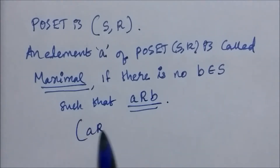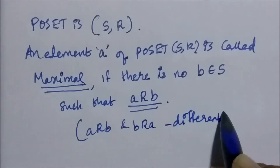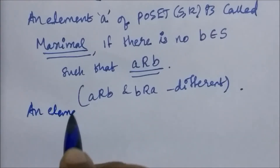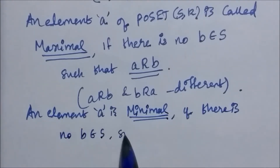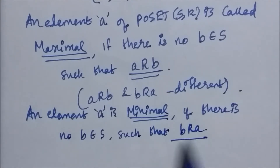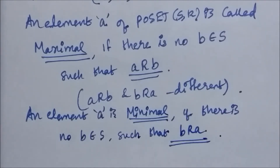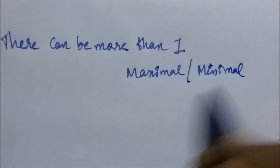Note that a related to b and b related to a are different. An element a is called minimal if there is no b belonging to set S such that b is related to a. One thing to be noted is that there can be more than one maximal element and more than one minimal element.